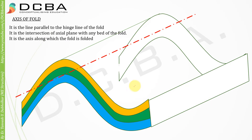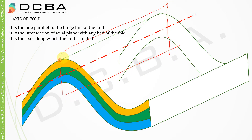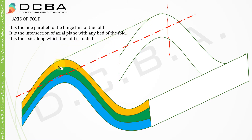The axis of the fold is the line parallel to the hinge line of the fold. It is the intersection of the axial plane with any bed of the fold — the axis along which the fold is folded. At whatever point the axial plane cuts my bed, I can draw a line from that point, and that line is called the axis of the fold. It is along this axis that the fold is folded.